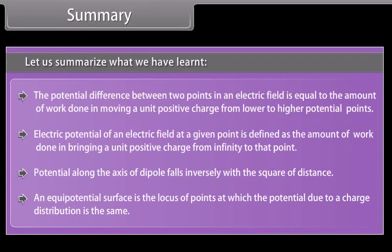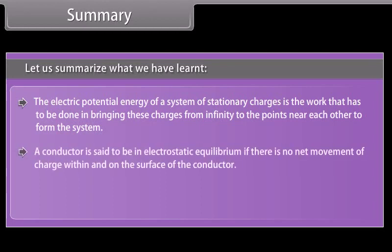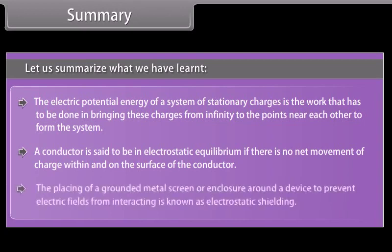An equipotential surface is the locus of points at which the potential due to a charge distribution is the same. The electric potential energy of a system of stationary charges is the work that has to be done in bringing these charges from infinity to form the system. A conductor is said to be in electrostatic equilibrium if there is no net movement of charge within and on the surface. The placing of a grounded metal screen or enclosure around a device to prevent electric fields from interacting is known as electrostatic shielding.